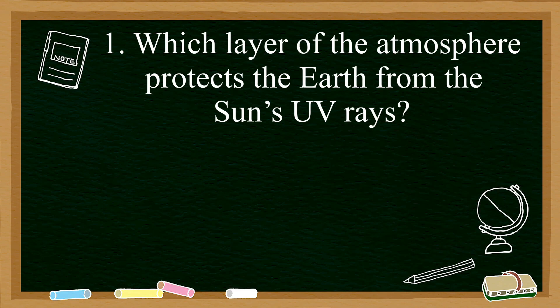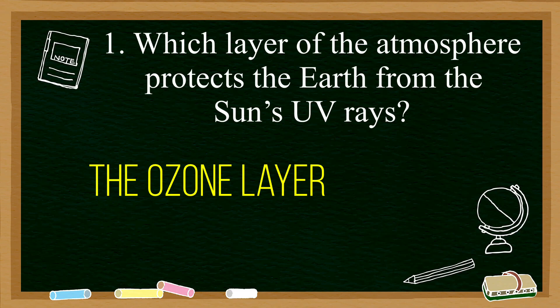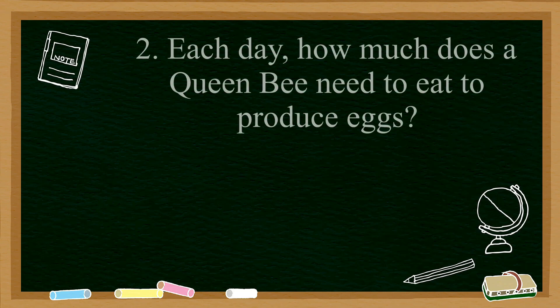The first question: which layer of the atmosphere protects the earth from the sun's UV rays? The ozone layer is the one that protects the earth from the sun's harmful UV rays.